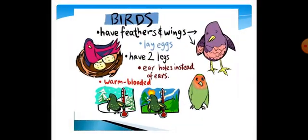Birds have feathers and wings and they lay eggs. They have two legs. They have beaks instead of mouths with teeth. They are all warm-blooded animals.